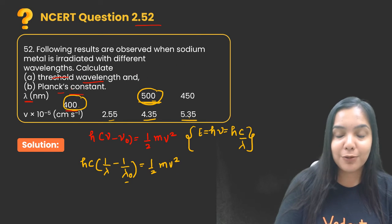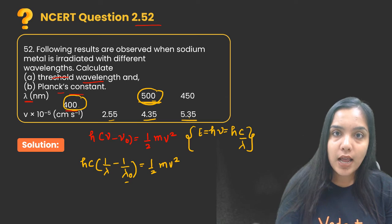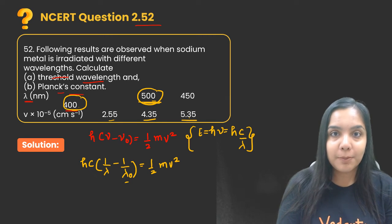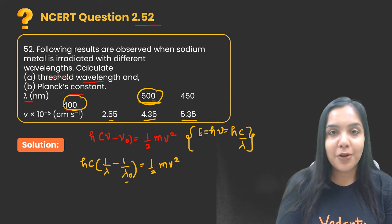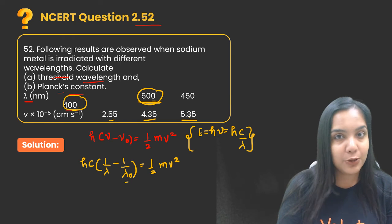Now the next part is to find out the value of Planck's constant. Usually Planck constant value we already know, this is a constant, its value 6.626 into 10 raised to power minus 34.